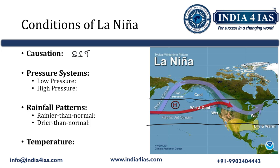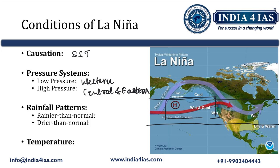Regarding pressure systems: there is low pressure over the western Pacific, causing increased rainfall in that region. There is high pressure over the central and eastern Pacific region. In the western Pacific the sea surface temperature is high, while in the central and eastern Pacific the sea surface pressure is high — these are the pressure conditions required for La Nina formation.